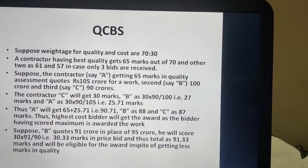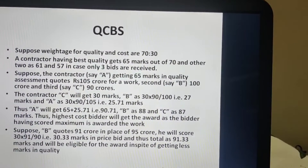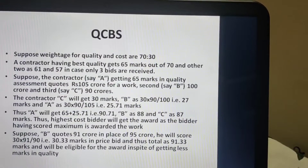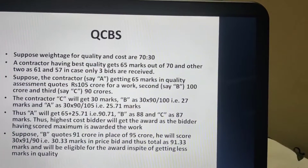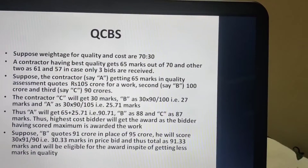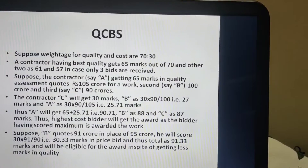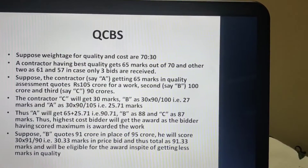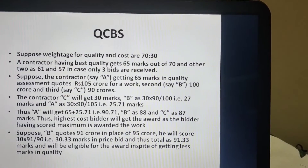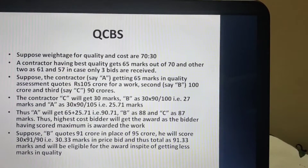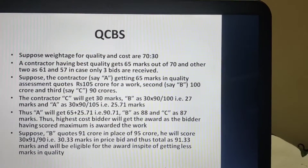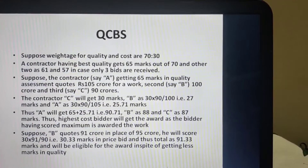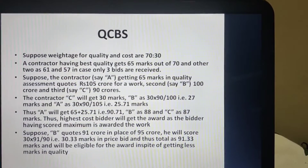Suppose a contractor having best quality gets 65 marks out of 70, and there are three contractors A, B, and C. Contractor A gets 65 marks in quality assessment and has quoted 105 crores. Contractor B, who got 61 marks, has quoted 100 crores. Contractor C, who got 57 marks in quality assessment, has quoted 90 crores.